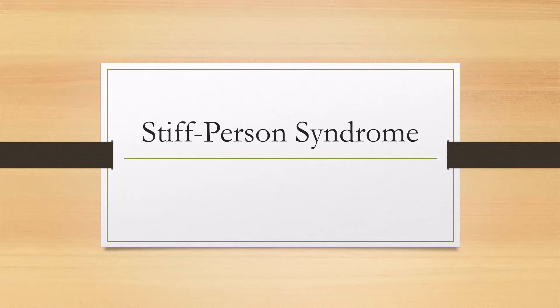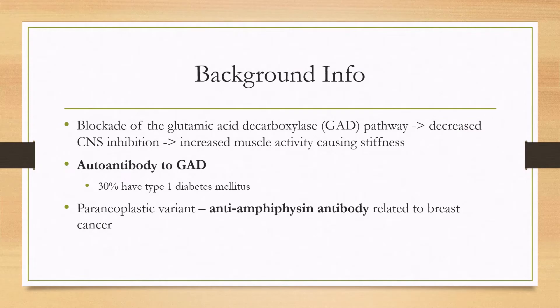Let's learn about stiff person syndrome. This is a disease where there is a blockade of the glutamic acid decarboxylase pathway, or the GAD pathway. This will cause decreased CNS inhibition — essentially over-activation of the central nervous system — which will cause increased muscle activity, and this is what causes the symptoms of the disease, such as stiffness of the body.